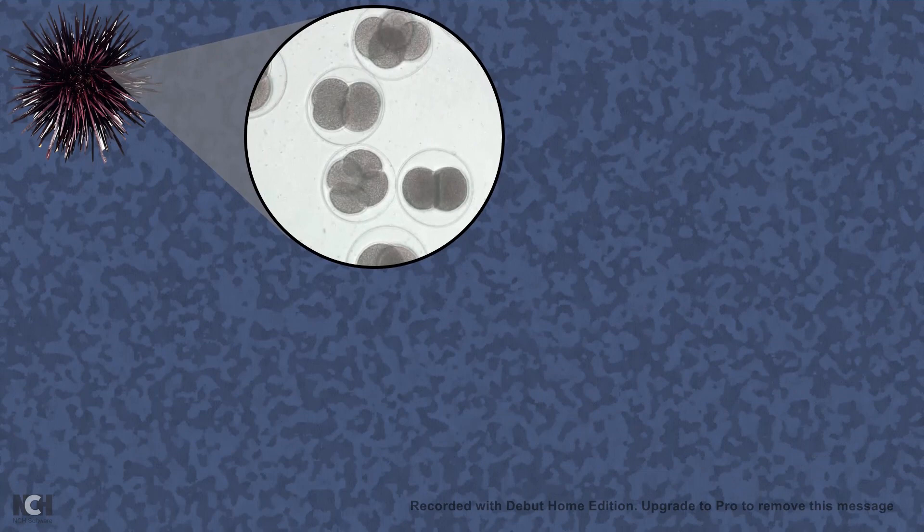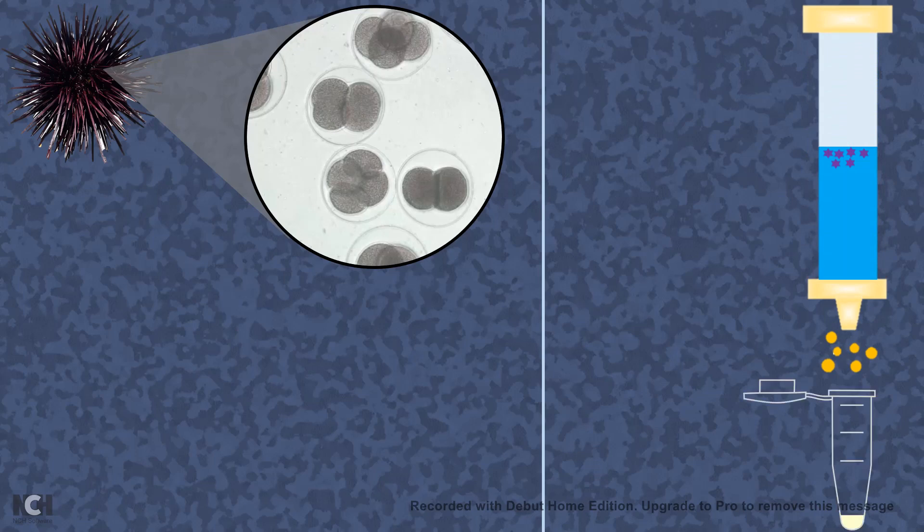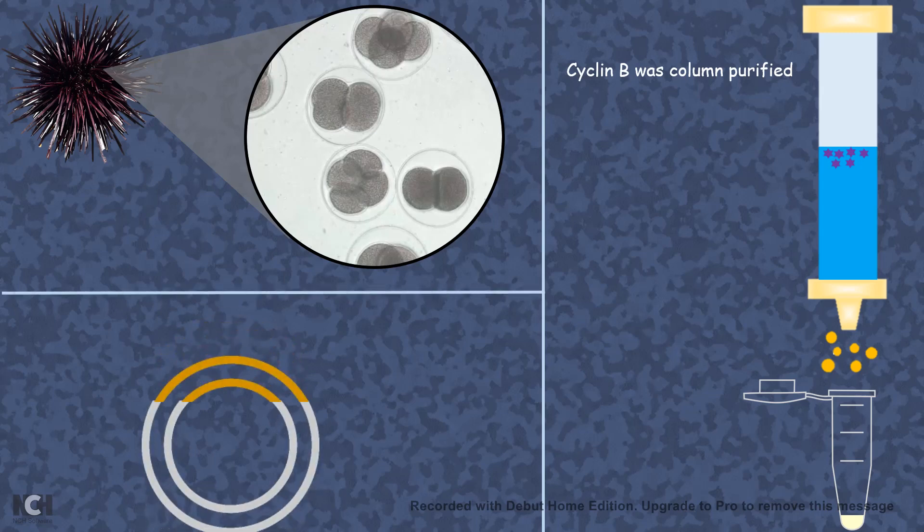Now, what happened is, from the sea urchin embryos, he took out or purified the cyclin B using column purification because that's the golden era of biochemistry. Not only that, cyclin B cDNA was cloned.